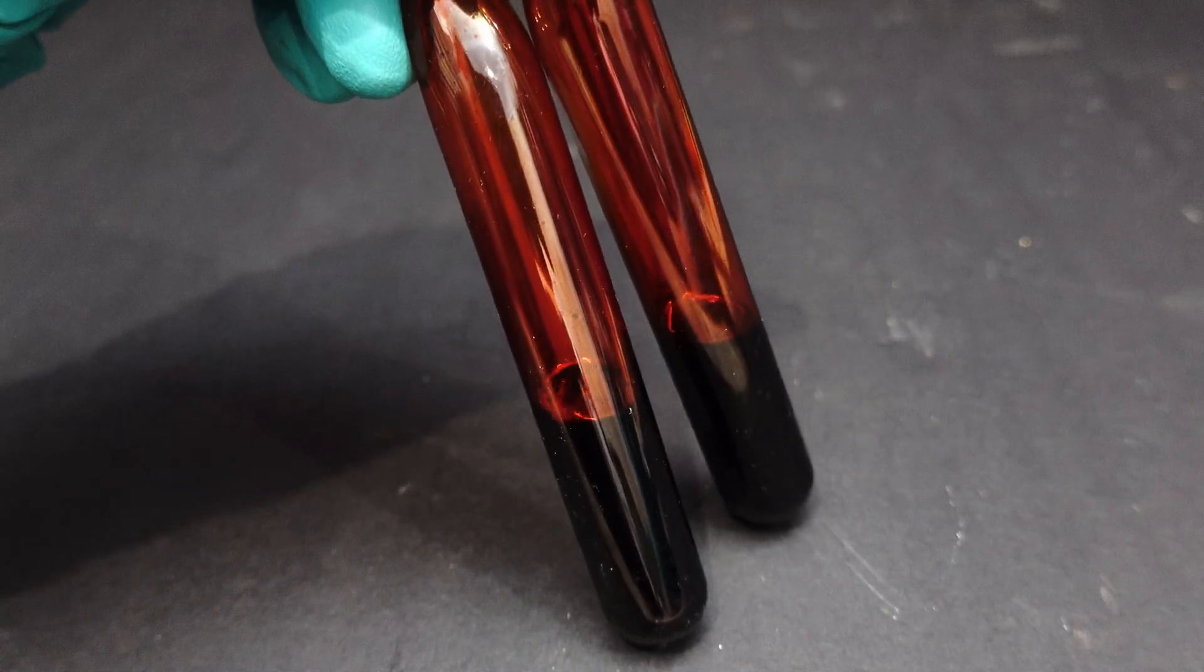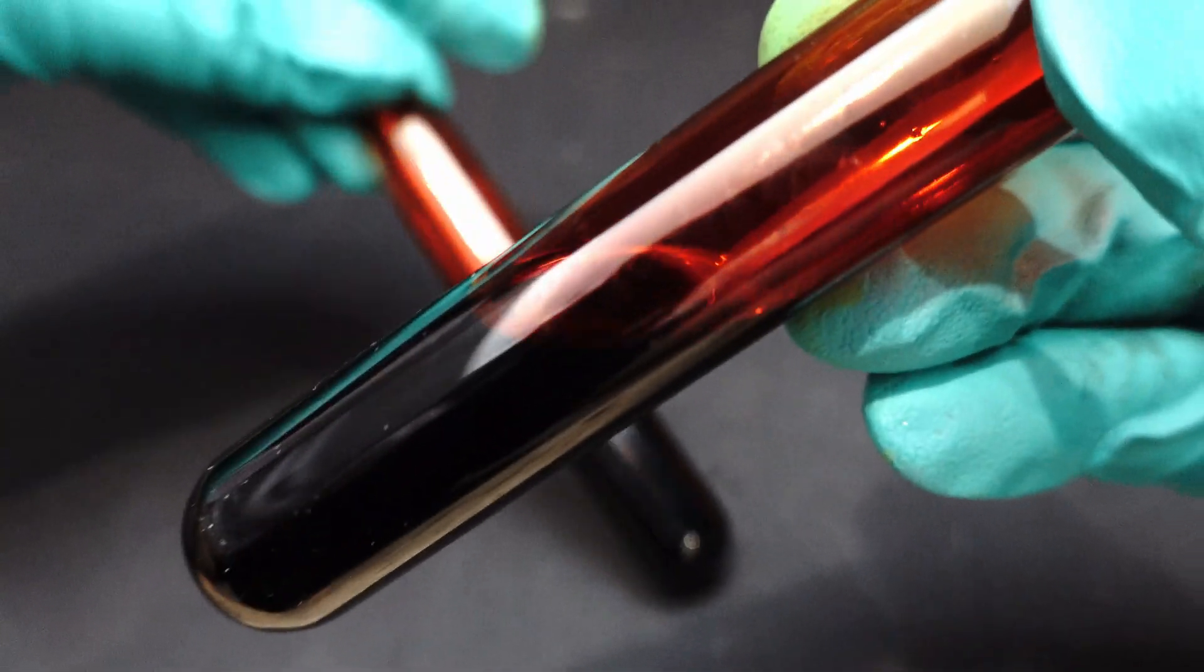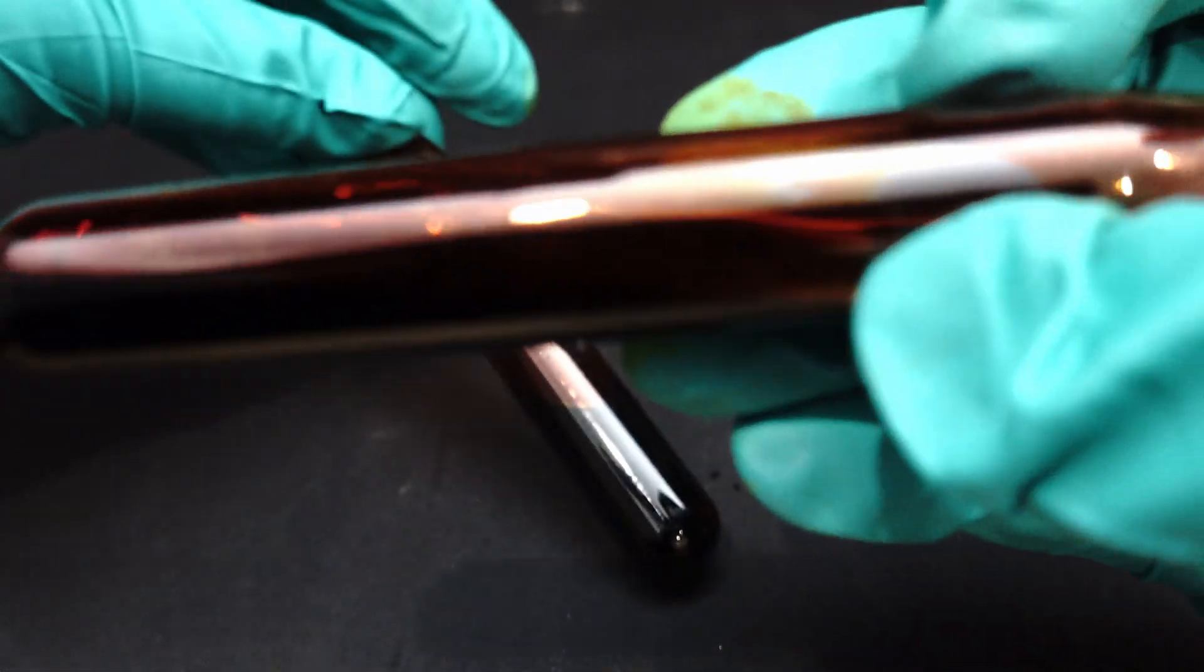I made two ampoules from glass tubes to store the Bromine and here it is, our final Bromine product. It is a very dark brown reddish colour, almost similar to soy sauce.